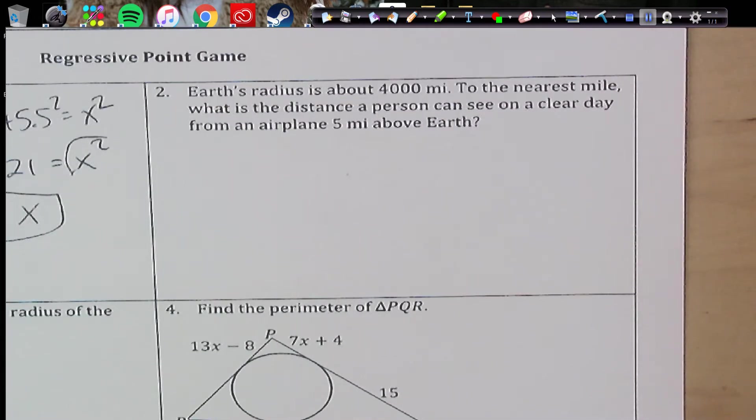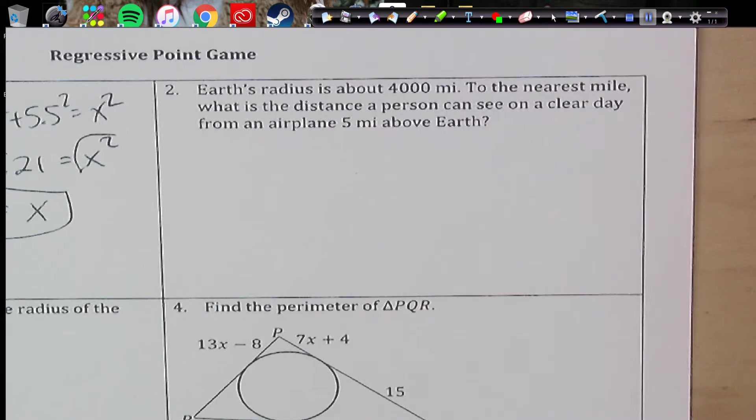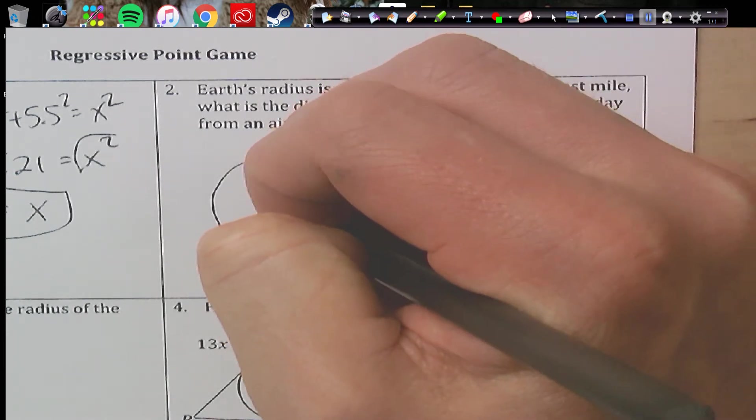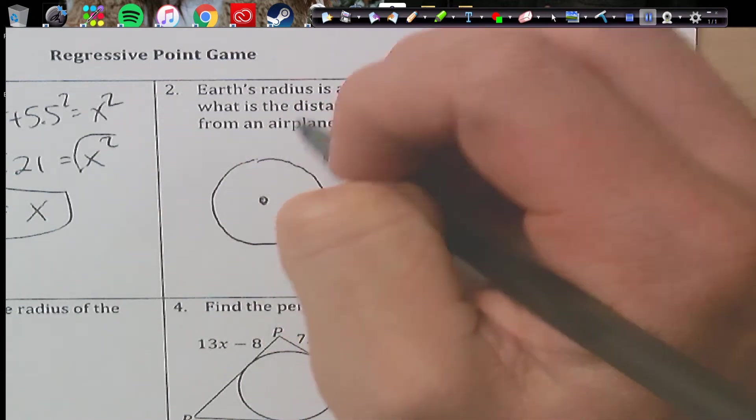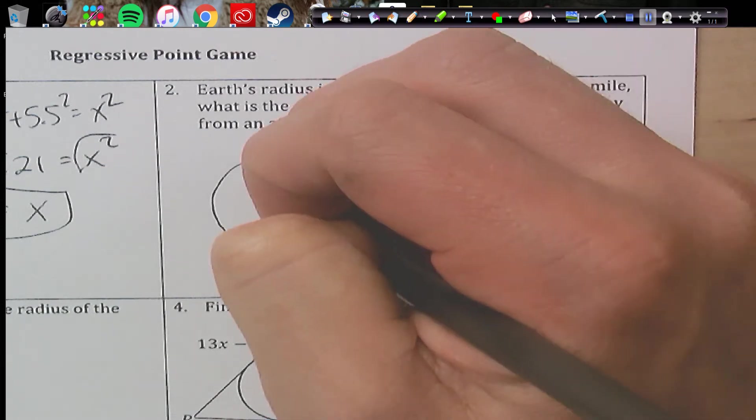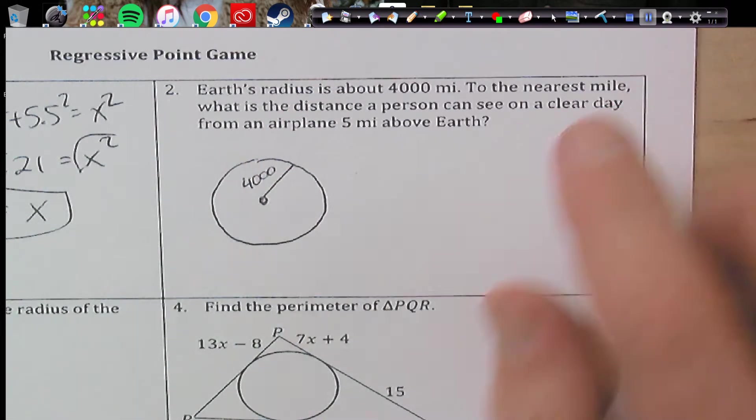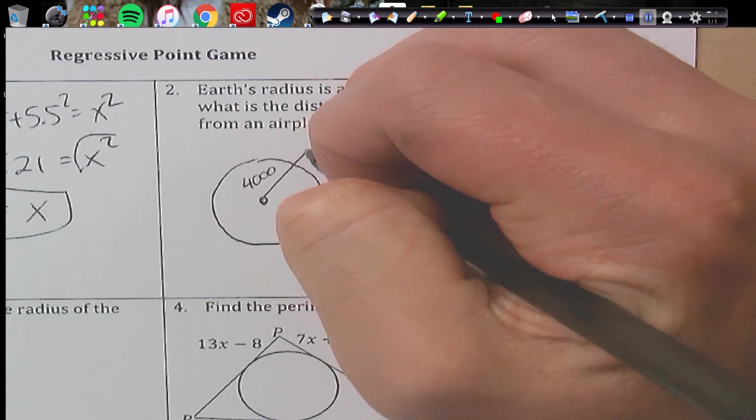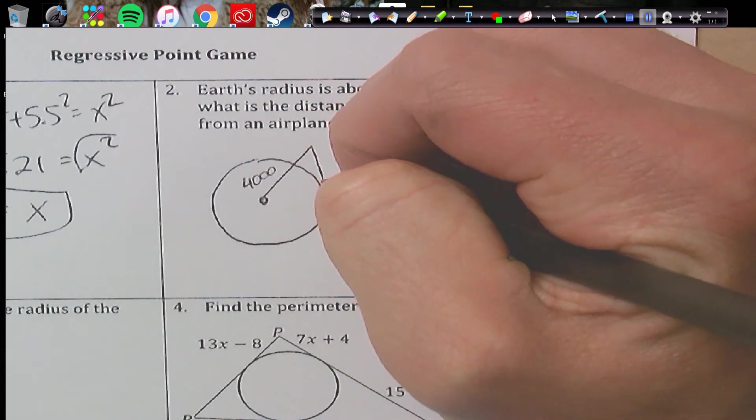Number two. Earth's radius is about 4,000 miles. So you want to go ahead and draw a circle. So the picture is going to help. Okay, so we have a radius is 4,000 miles. What is the distance a person can see on a clear day from an airplane, 5 miles? So if I go 5 additional miles up, how much can I see?